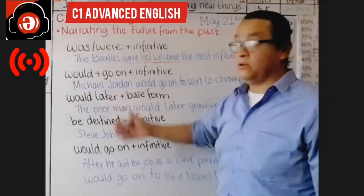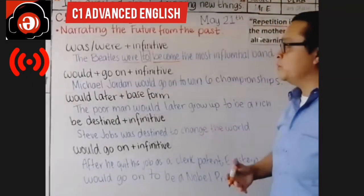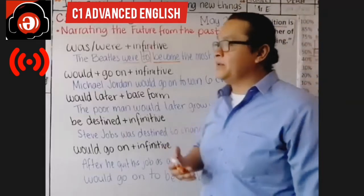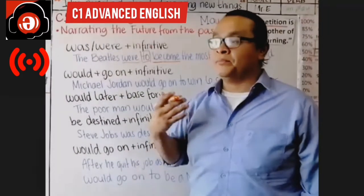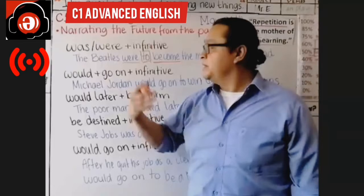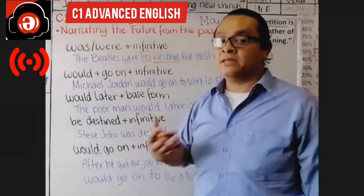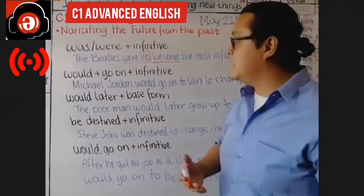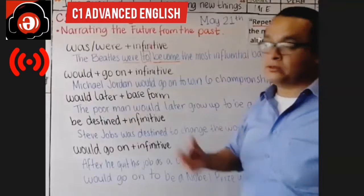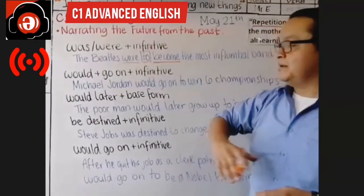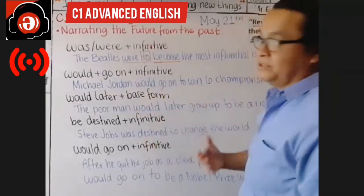Here's another structure: 'would go on + to + infinitive.' Everybody knows Michael Jordan, the famous basketball player. Michael Jordan would go on to win six championships. Imagine you're reading Michael Jordan's biography. At the beginning, he was a normal kid — he wasn't popular, and when he started playing basketball he wasn't really that good. But later on, Michael Jordan would go on to win six championships.